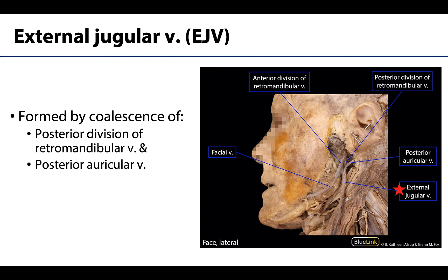The external jugular vein is formed by the coalescence — or the joining, you'll hear me use that word coalescence quite a bit, it just means the joining together — of the posterior auricular vein, which is located posterior to the ear, and the posterior division of the retromandibular vein. Those two will come together to form the external jugular. You can see once again it is starting to cross over that sternocleidomastoid muscle.